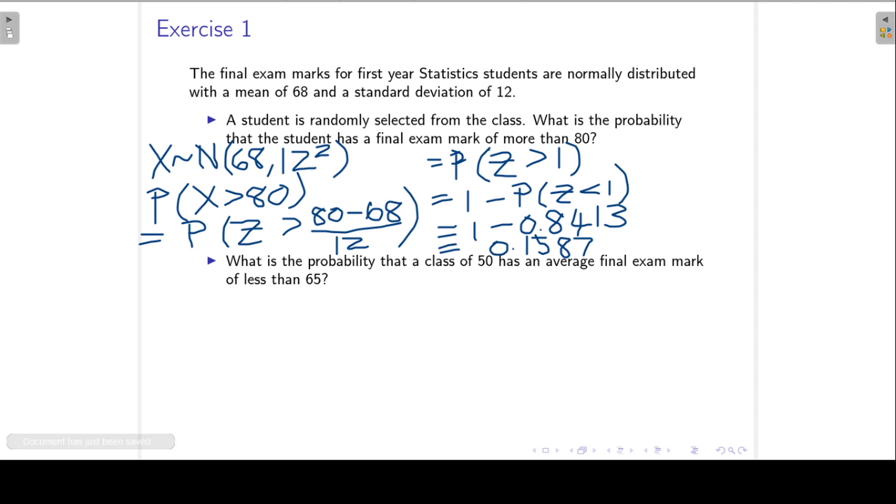We are working with X bar. We can write down the sampling distribution of X bar. It has the same mean as the population, and then it has a variance which is equal to the population variance divided by the sample size, which is 50. Now we want to find the probability that X bar, the sample mean, is less than 65. So again, we start by standardizing.